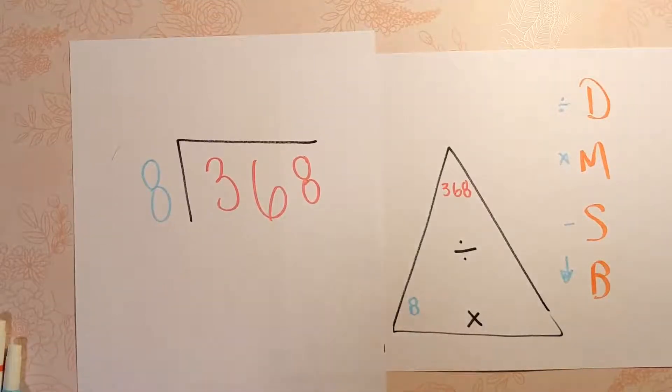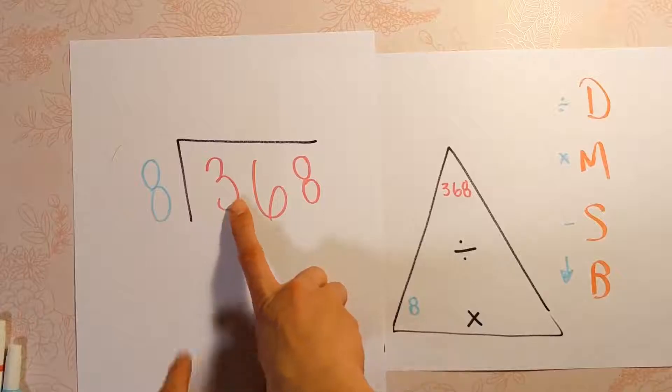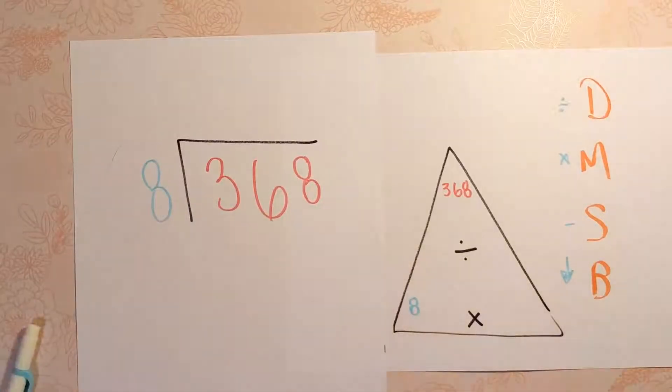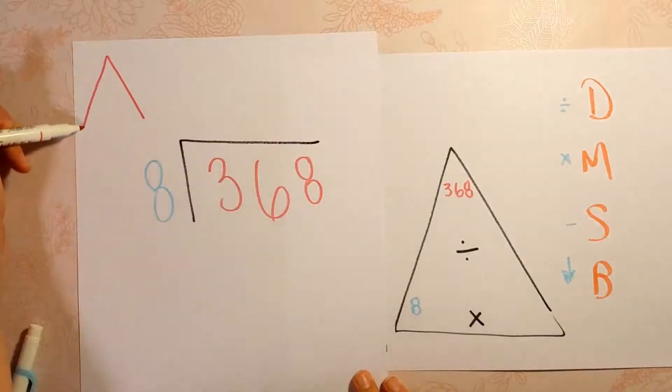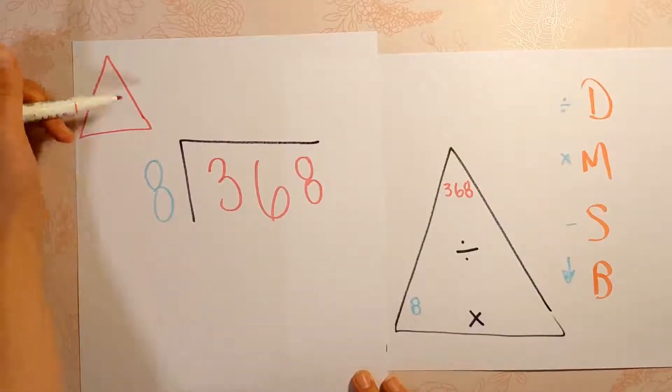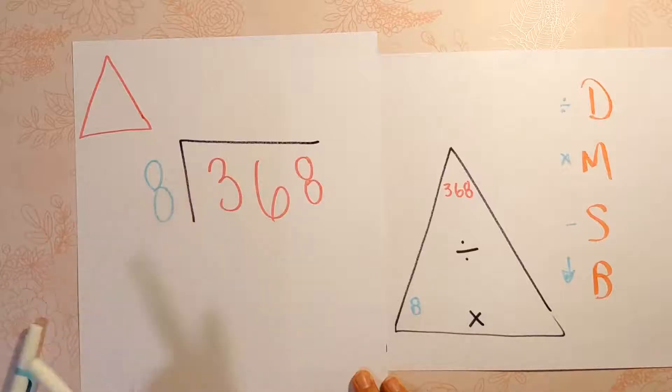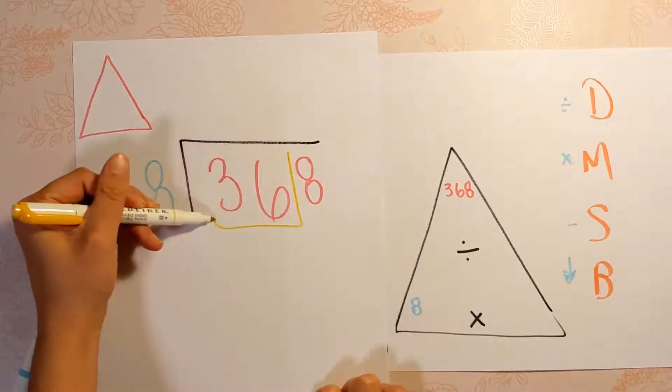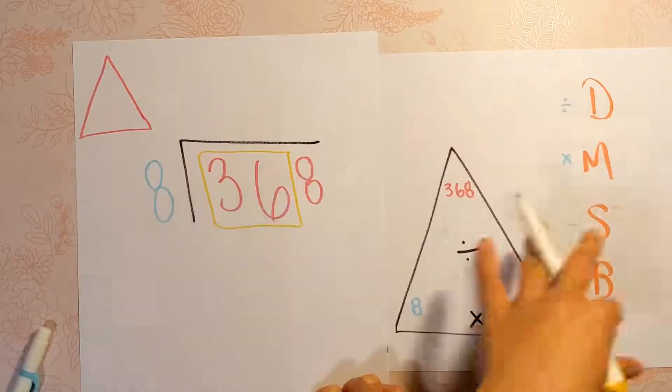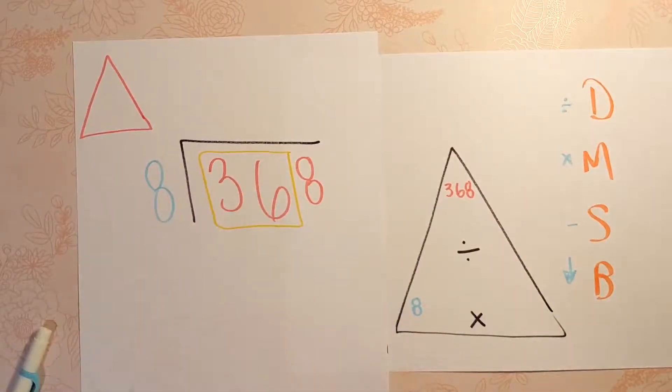So the first step is to divide. So we would take this number and we would do 3 divided by 8, except you can't do 3 divided by 8. That's not possible. So we need to pick that first number, needs to be something that 8 can fit into. So in that case, when that happens, you're just going to take this number here instead. So we'll do the same steps, but instead of 3, we'll do 36. So we're going to do 36 divided by 8.